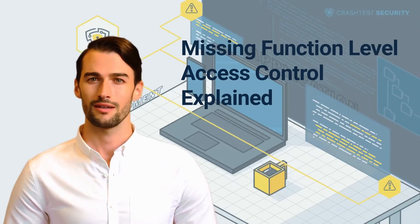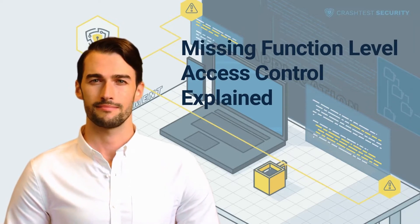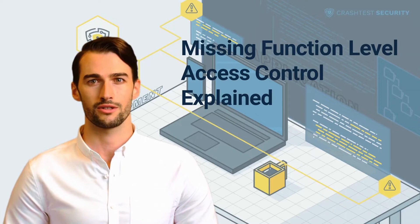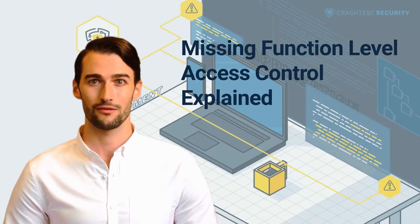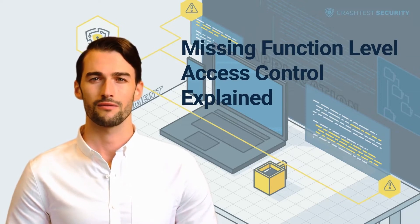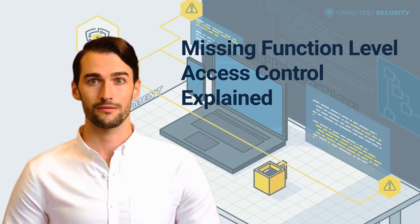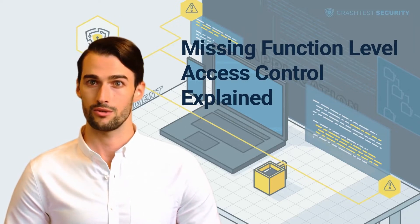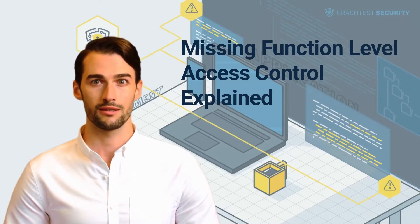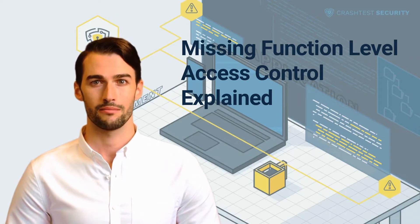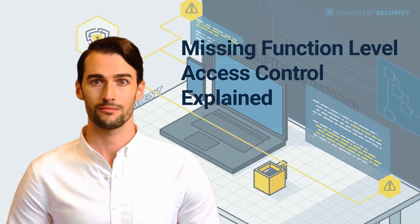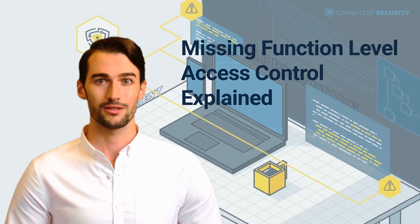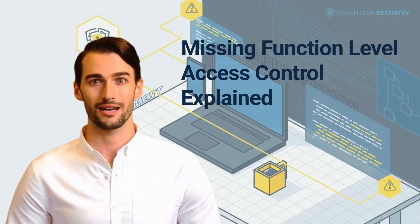What does a missing function-level access control mean? The missing function-level authorization security vulnerability occurs when there are insufficient authorization checks for sensitive request handlers. This common vulnerability allows malicious users to access restricted resources by escalating their permissions at the function level. The attacker is typically an authenticated system user who changes a privileged function parameter to send corrupt requests for unauthorized admin access.